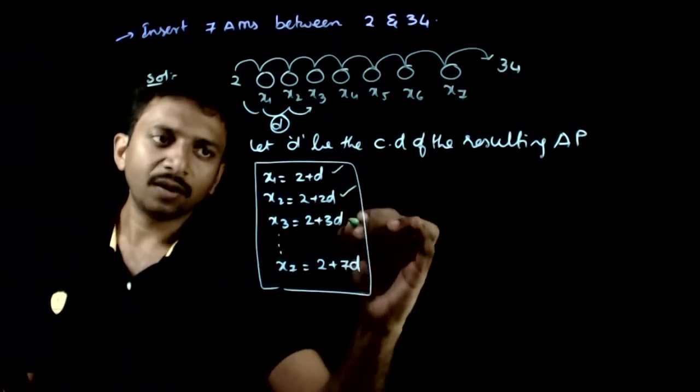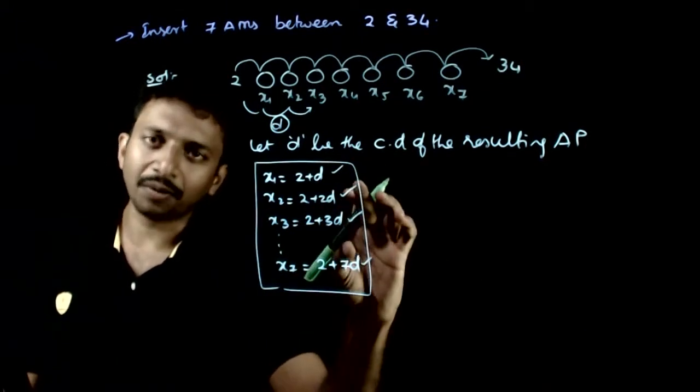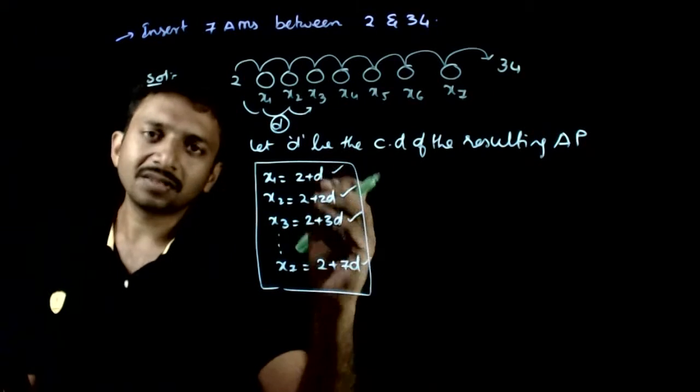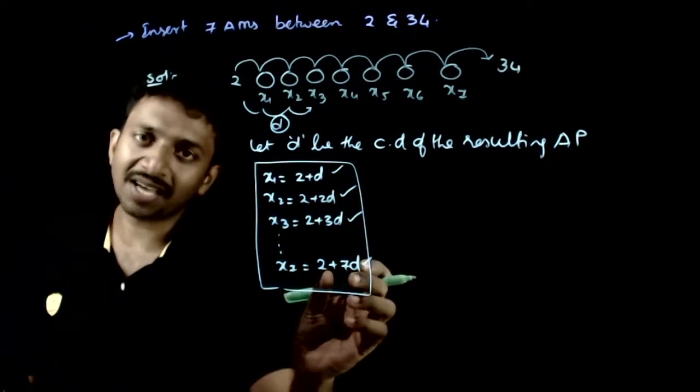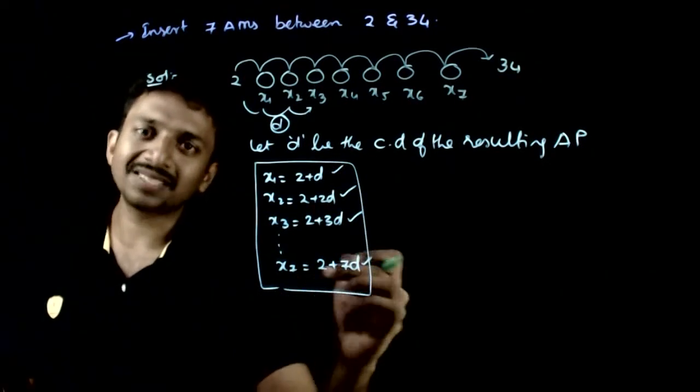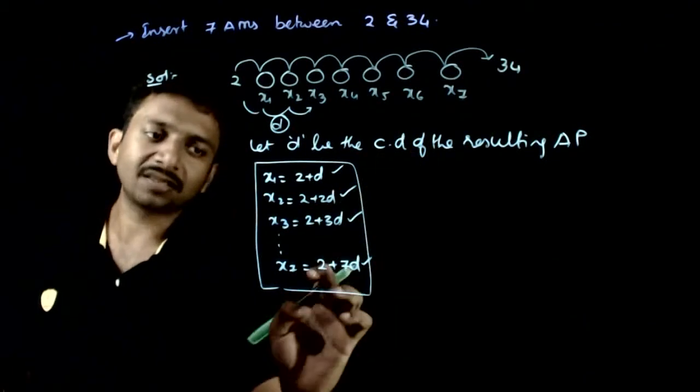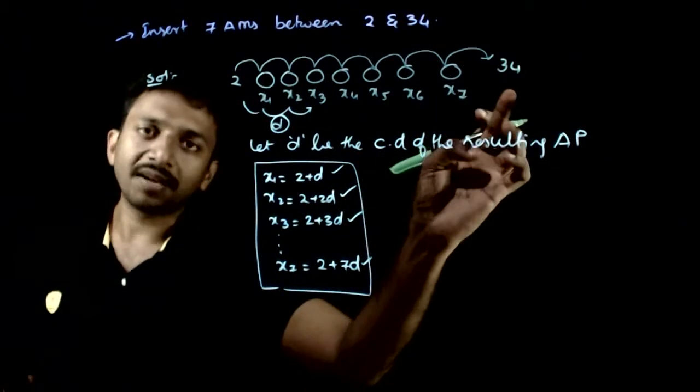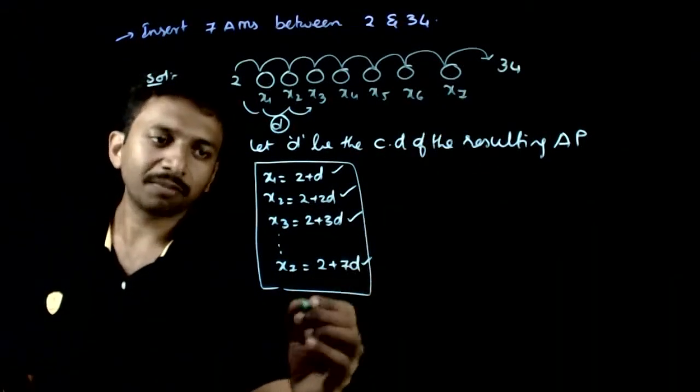You can see that only D is the unknown. If we find D, then D comes from the next equation. So x7 is 2 plus 7D, and the next term...